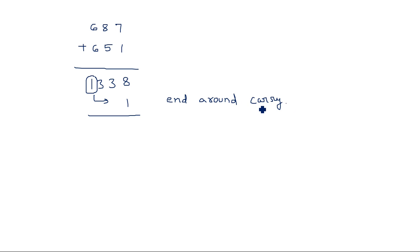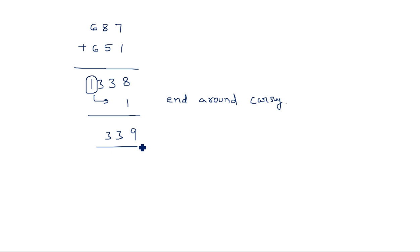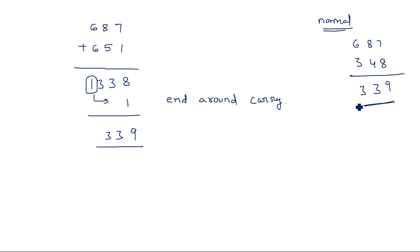End around carry means the carry needs to be added at the 1s place. In the 10s complement method there is no need to add this carry back — if carry is generated in 10s complement, we ignore it. But in the 9s complement method, we must add this carry back to the result. So adding it gives 339. Verifying normally: 687 minus 348 — 17 minus 8 is 9, 7 minus 4 is 3, 6 minus 3 is 3 — answer is 339. This is confirmed using the 9s complement method.